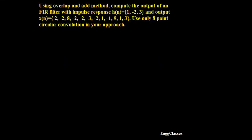Hello everyone. Welcome to NG Classes YouTube channel for a video lecture series on digital signal processing. In this video we will consider a numerical on the overlap-add method. The problem says: using the overlap-add method, compute the output of an FIR filter whose impulse response H is given, and the input sequence X is also given. Use only 8-point circular convolution in your approach. Now I can start with the solution.